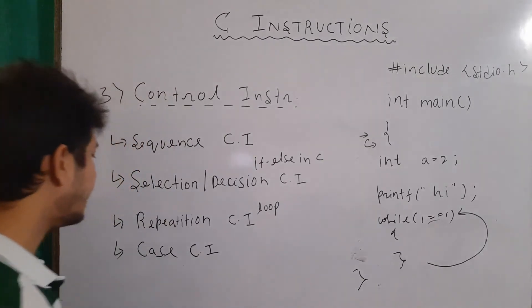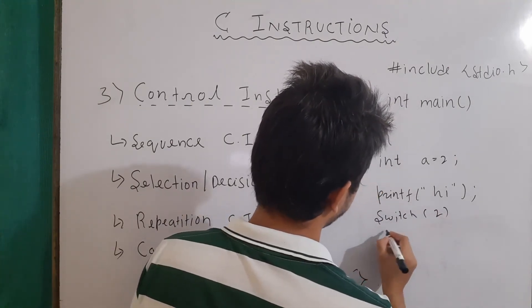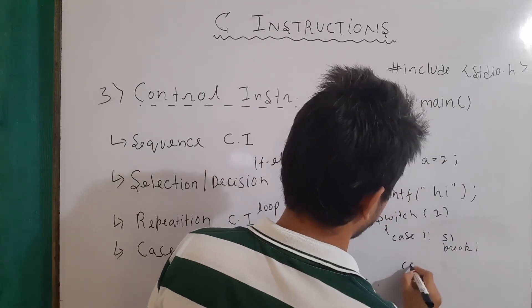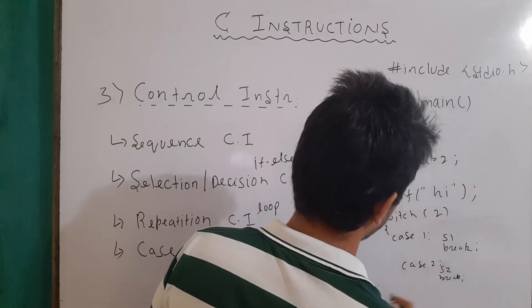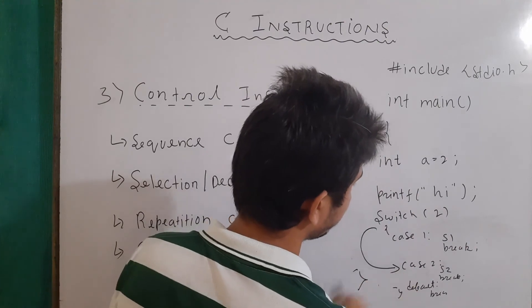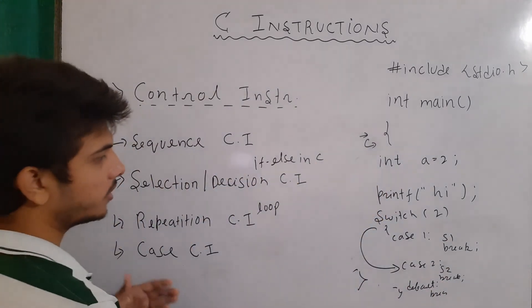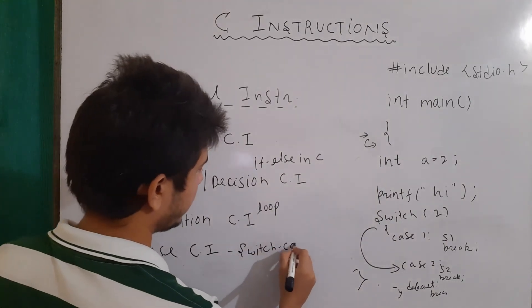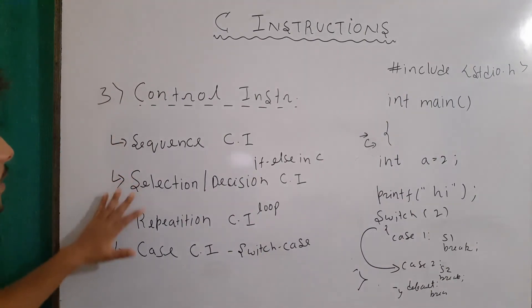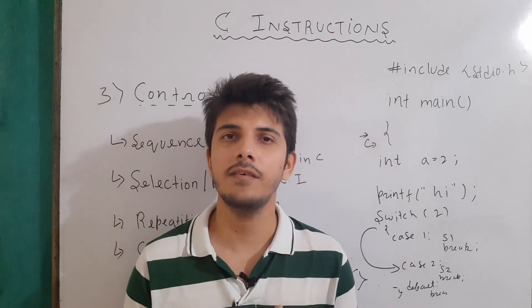Then we have case control instructions. In these, we use the switch case — we write 'switch' with some value, and in its body we write cases with statements and break keywords. For example, case 1 with statement one and break, case 2 with statement two and break, and a default at the end with break. We will talk about case control instructions in the switch case videos. Each of these topics — if-else, loops, and switch case — will be covered in great detail in upcoming videos. For now, just remember there are four types of control instructions. Thanks for watching!